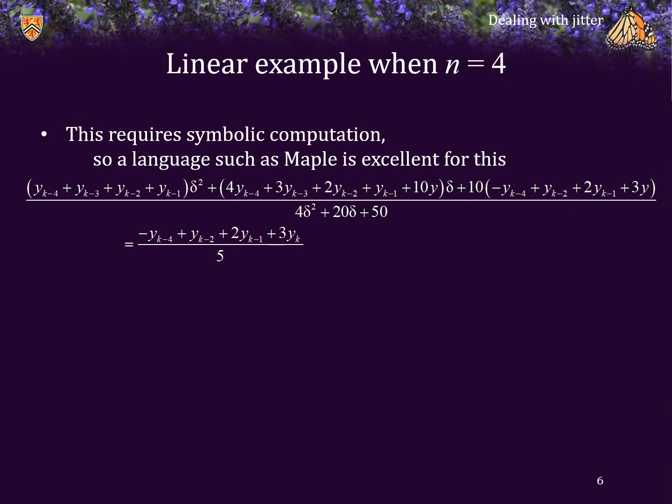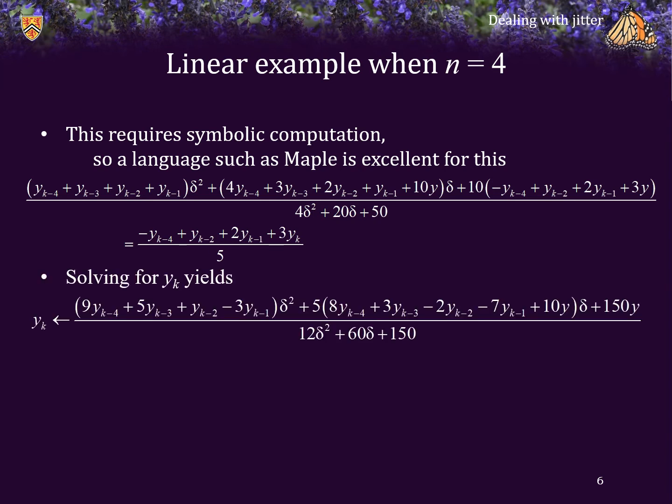In this case, here are the two constant coefficients equated, and we can solve for y sub k. And you'll notice that this is a reasonably straightforward, simple formula is simply two linear combinations of the previous y values and the most current reading. So this is actually very fast to calculate.